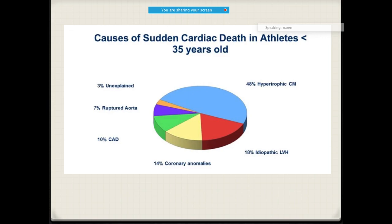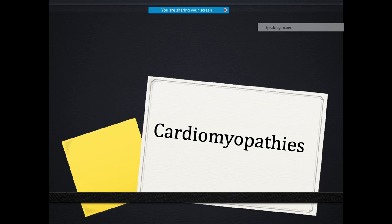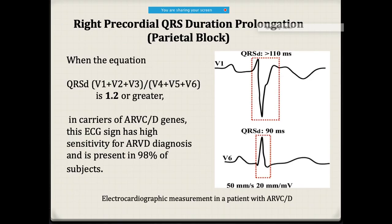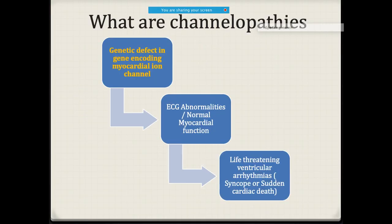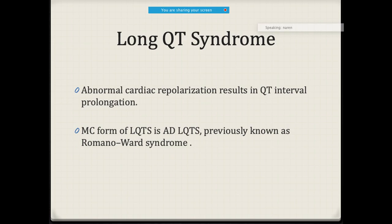So those are the common causes of sudden cardiac death in athletes. After knowing the cardiomyopathies, we move to channelopathies. Channelopathies are essentially genetic defects in gene coding that lead to ECG abnormalities and life-threatening ventricular arrhythmias. On ECG you may see short QT, long QT, or Brugada syndrome.